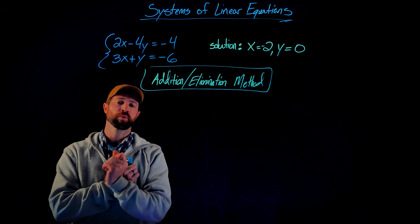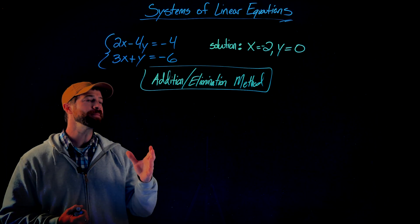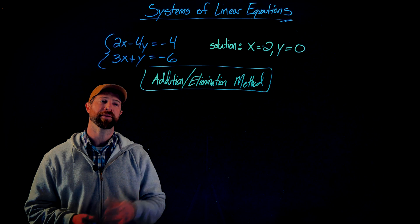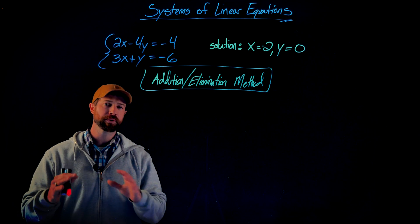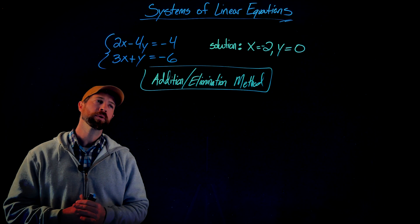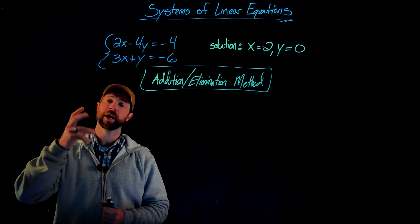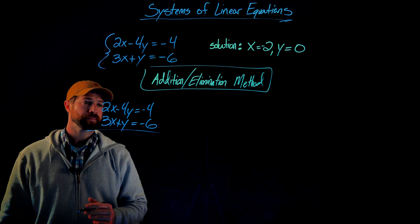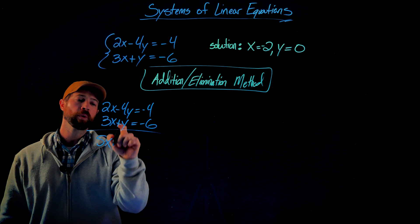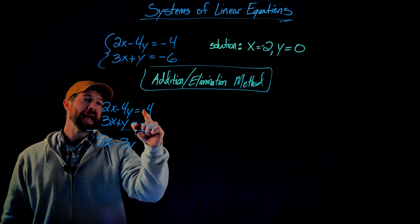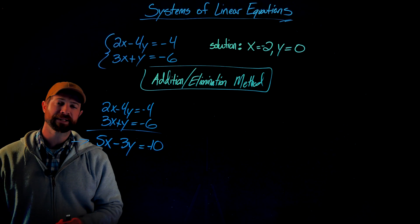So far we've talked about graphing and the substitution method as ways of solving linear equations. The third method is the addition and elimination method. In this method, we're going to put the two equations together by adding sides of the equations together. For instance, I can add these two equations together as they stand: 2x plus 3x is 5x, negative 4y plus y is negative 3y, and negative 4 plus negative 6 is negative 10. This gives a third true equation, but it's not very useful.